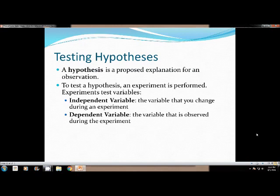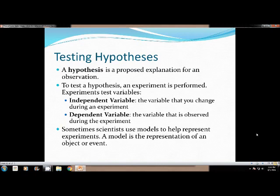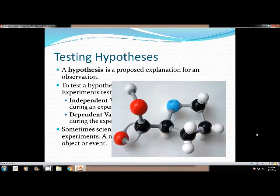When we have experiments, we have testing variables, the independent and dependent variables. Independent is the variable that you change. So it's the one thing that you're going to change. The dependent variable is what is then observed, but it wasn't changed at the beginning. It's just what you're looking at now to see if there was an effect on the test. Sometimes scientists use models to help represent experiments, especially if they can't see it because it's so small, which is a lot of chemistry. A model is a representation of an object or event, which this is an example of chemical bonding in the models that we use.